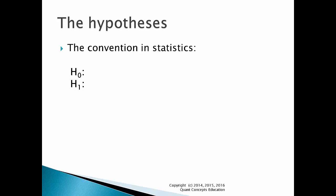Simply insert the null hypothesis — the claim with the equal sign — next to H0. And the alternate hypothesis — the one without the equal sign — next to H1. And that's all there is to correctly setting up the hypotheses. It's always this easy, as long as you follow these simple rules.